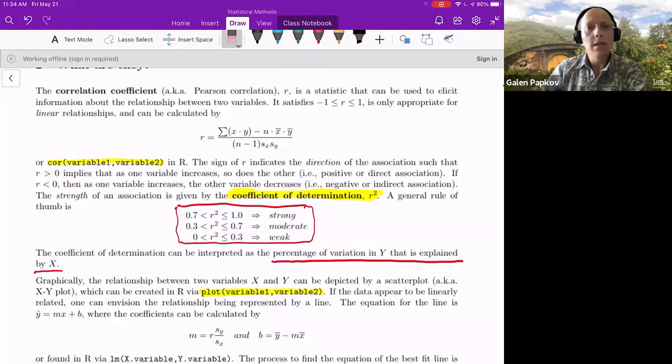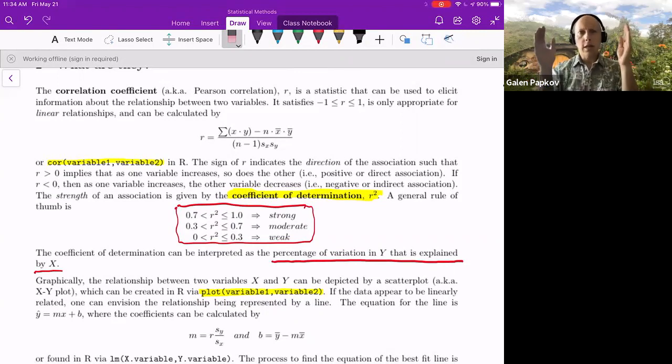The formula, or at least the version of the formula that I like to use the most, I've got on the top here. And that is going to be the sum of the product of X times Y. So for each, imagine you've got two columns, two variables, and you've got many rows, the same number of rows in each variable.